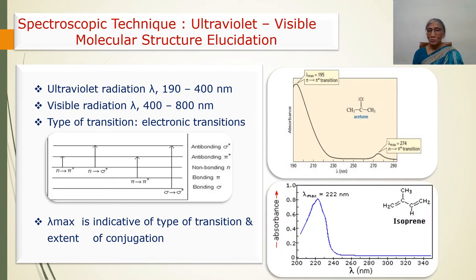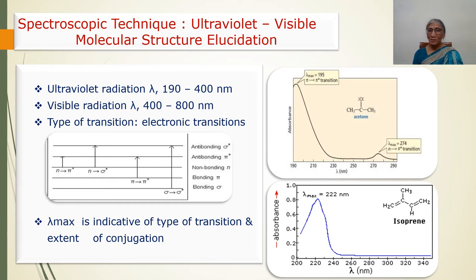Another example is isoprene. In isoprene, there are two double bonds present in conjugation, and the lambda max is shown at 222 nanometers. The lambda max for the pi to pi* transition in acetone was at 195 nanometers, whereas in isoprene it is at 222 nanometers. The difference is because in isoprene the two double bonds are in conjugation. As conjugation increases, the lambda max is shifted towards a longer wavelength.